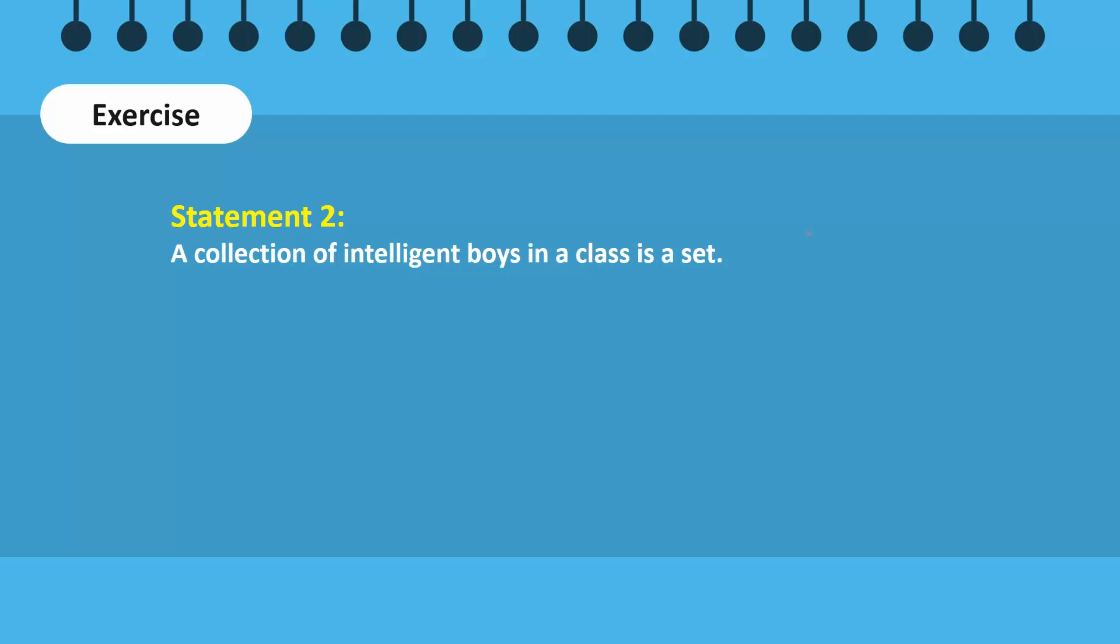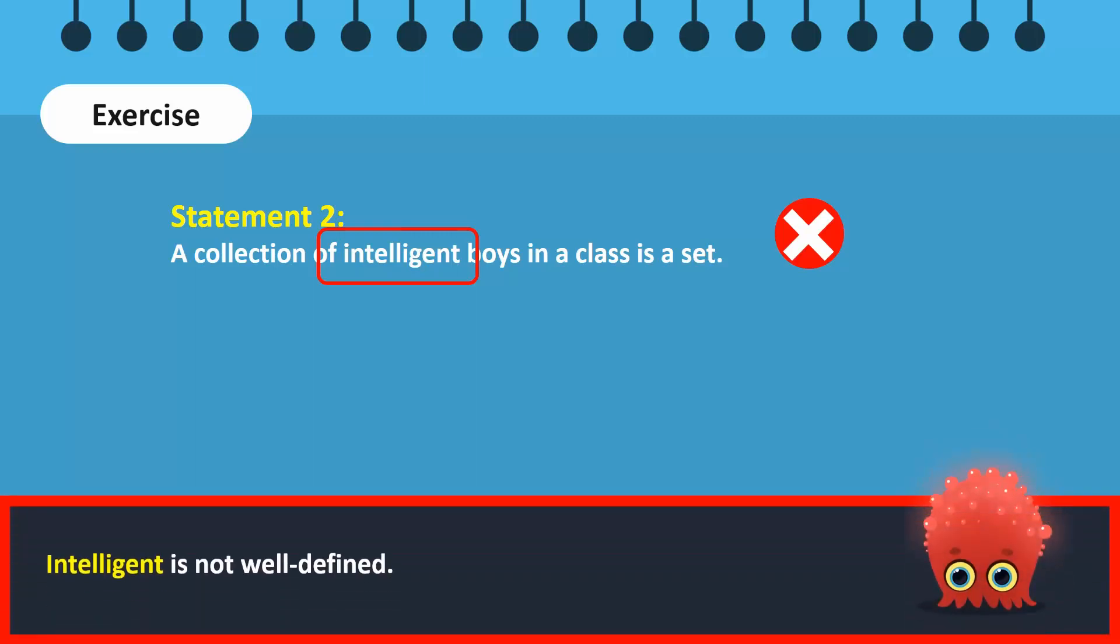Moving on, a collection of intelligent boys in a class does not form a set. Similar to the collection of beautiful flowers, intelligent is a word that is subjective and not well-defined. Is a boy considered intelligent if he scores grade A, or grade B, or grade C? To make this a set, we can remove the word intelligent, so a collection of boys in a class is a set. Or we can change intelligent to something more well-defined, such as a collection of boys in a class who score above 80 percent. This will also be a set.